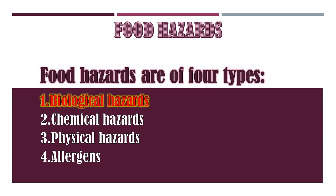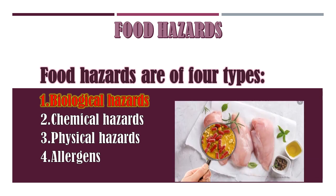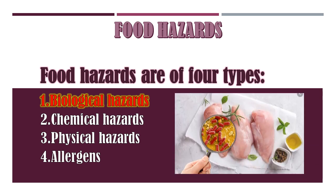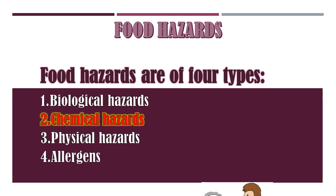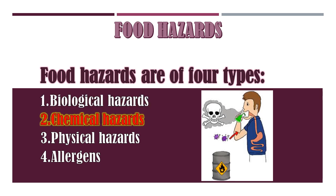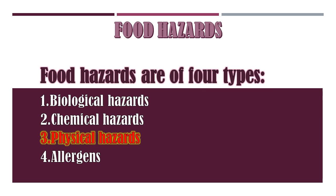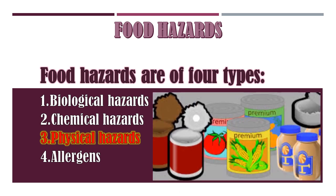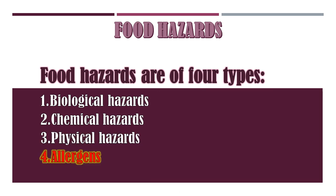Food hazards are of four types. Number one, biological hazards, as you can see in the picture. Number two, chemical hazards. Number three, physical hazards. Number four, allergens.